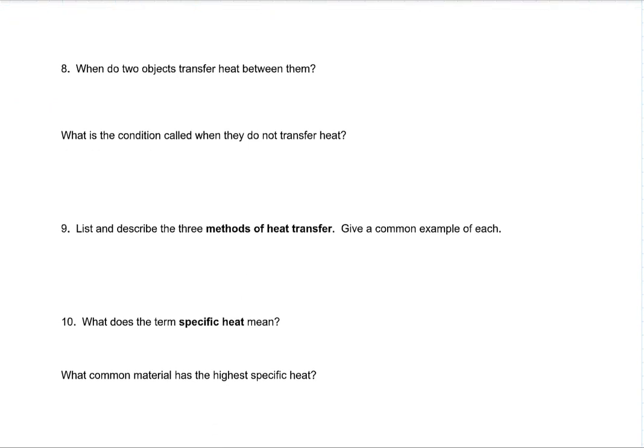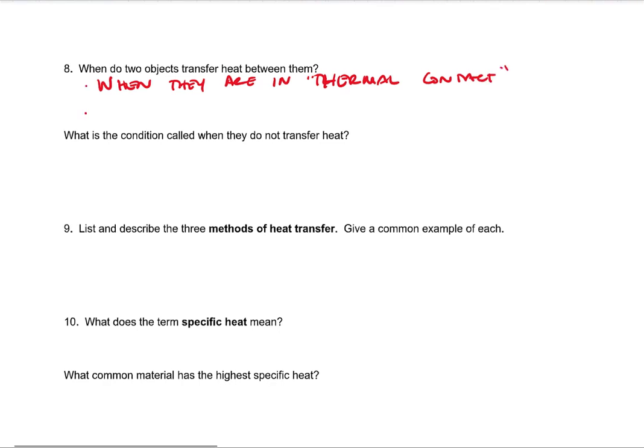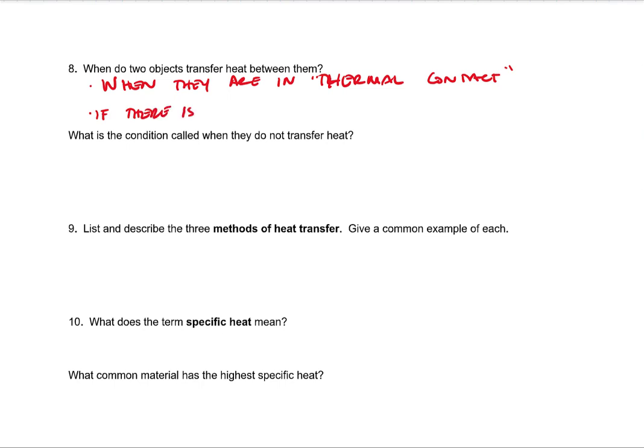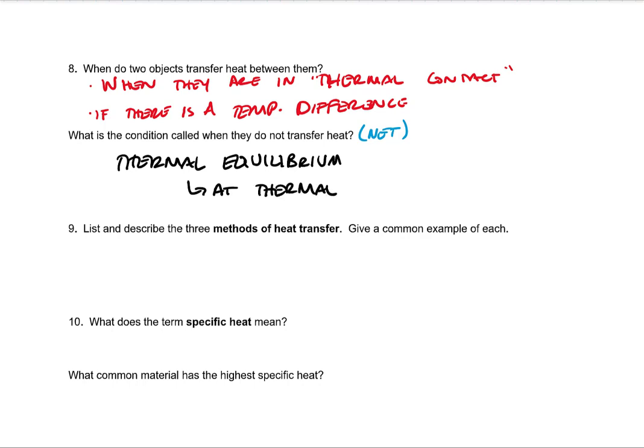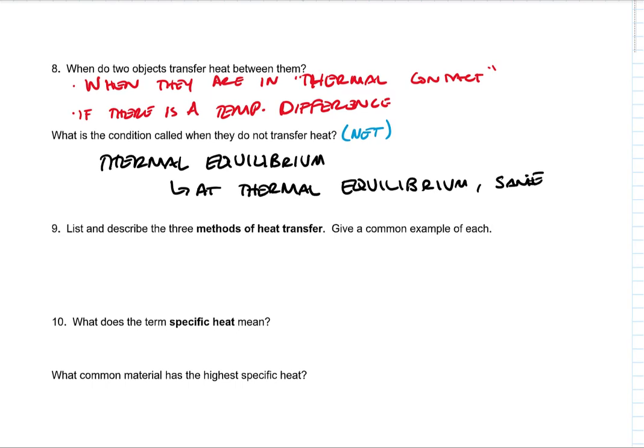When do two objects transfer heat between them? One is when they are in thermal contact. And the other is if there is a temperature difference. What is the condition called when they do not transfer heat? We're going to say net transfer of heat. That condition is thermal equilibrium. At thermal equilibrium, the objects have the same temperature.